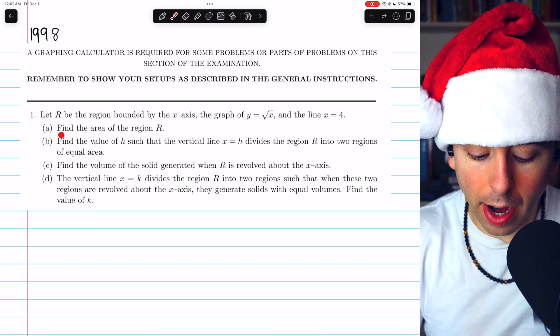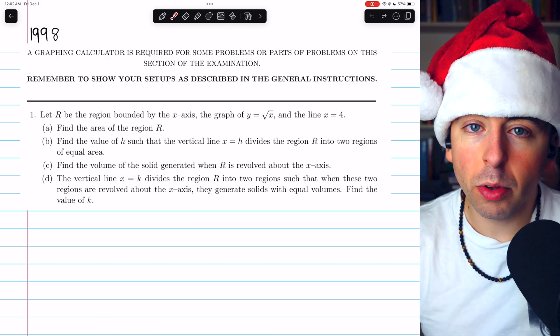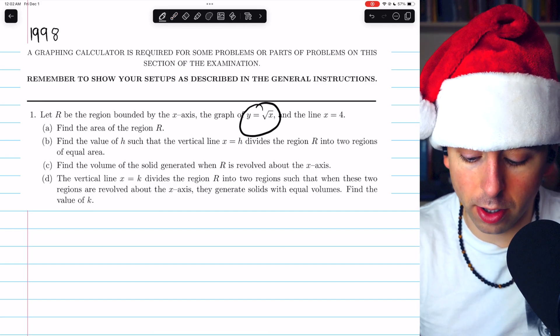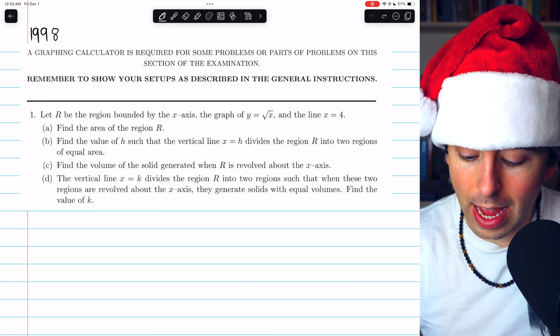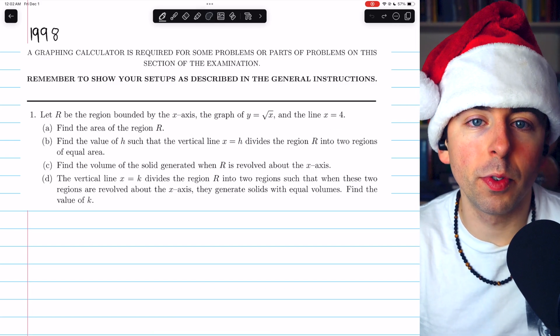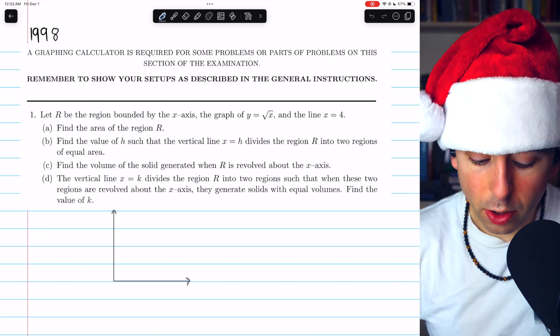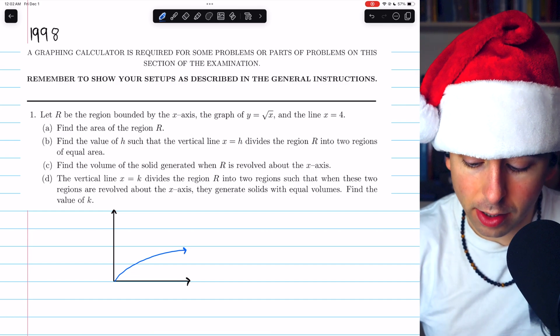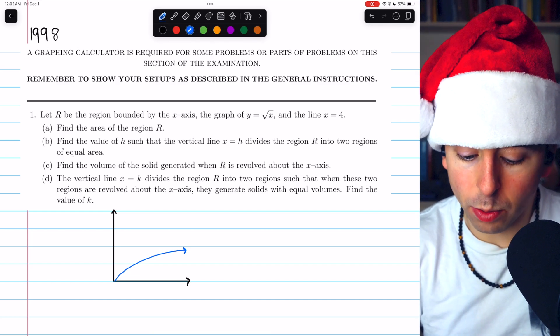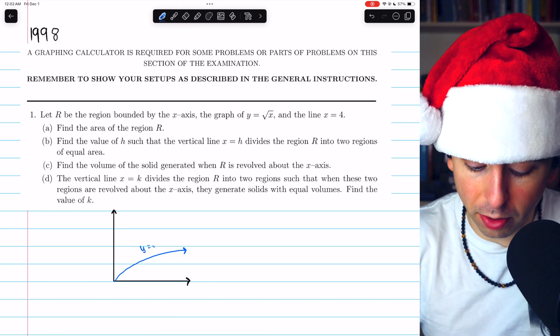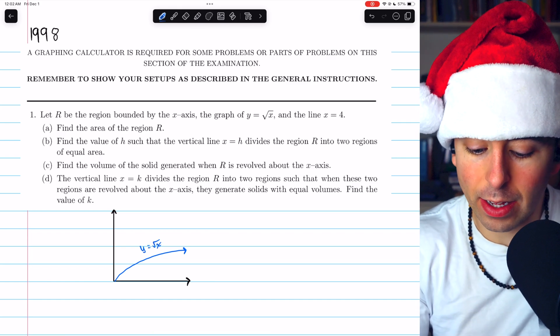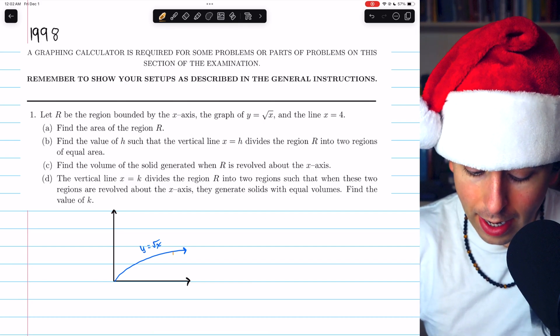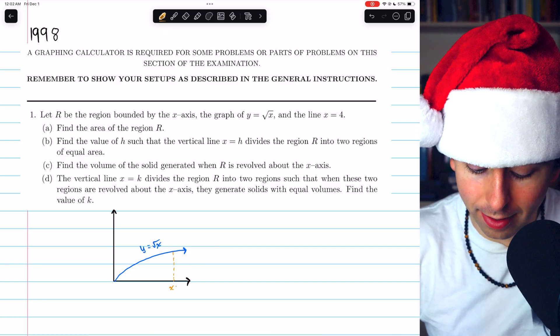Part A is to find the area of the region R. So that should be pretty straightforward. We'll just start out with a sketch of the function y equals root x and the line x equals 4. And we just need to find the area of the region enclosed. You should know by now that y equals root x looks something like that. And the line x equals 4. I'll draw in just a second. We should probably just go ahead and label this y equals root x. And then in orange, we will write the line x equals 4. And maybe that's right here.